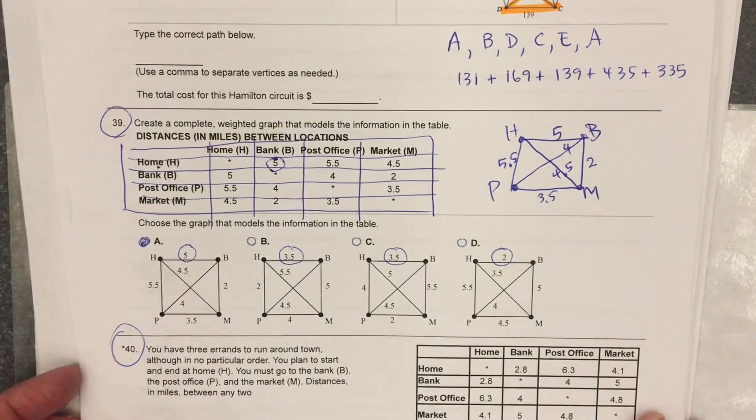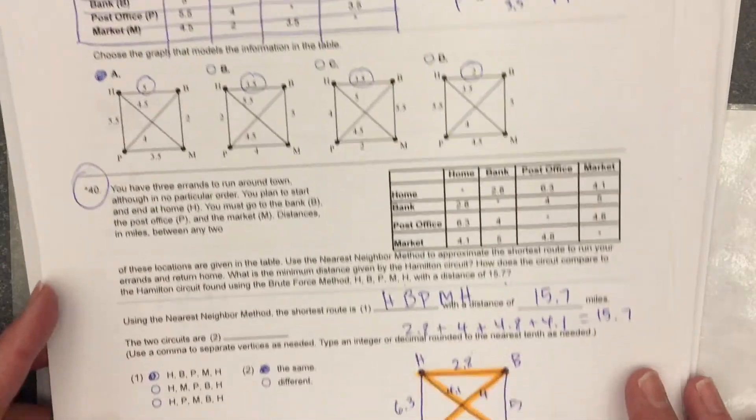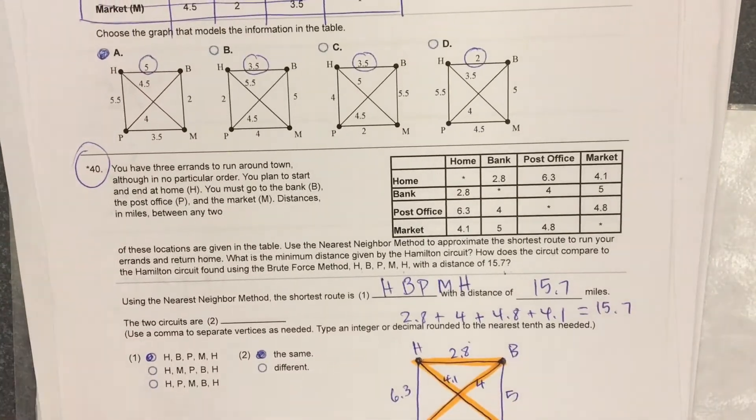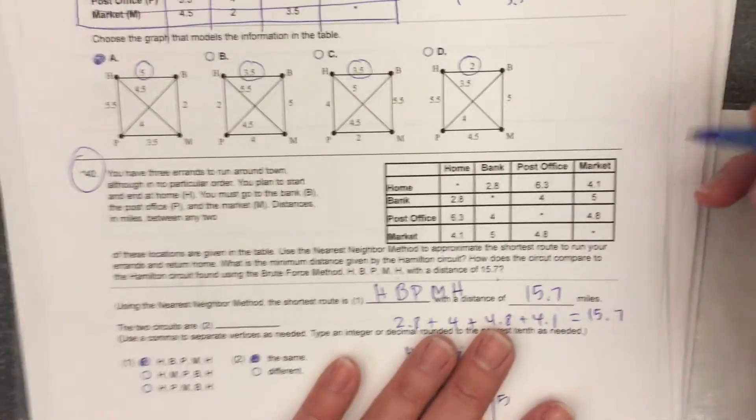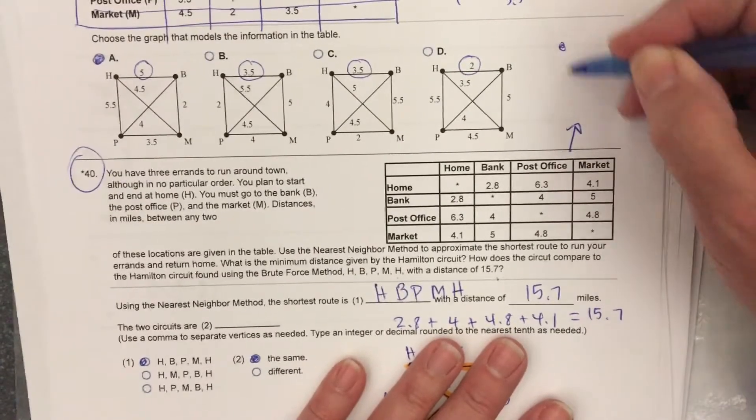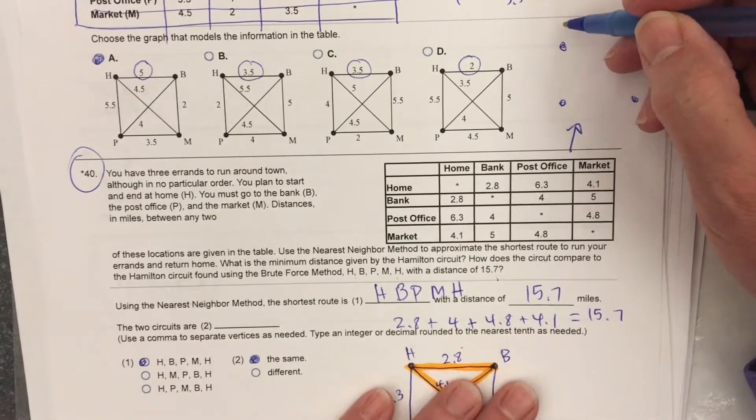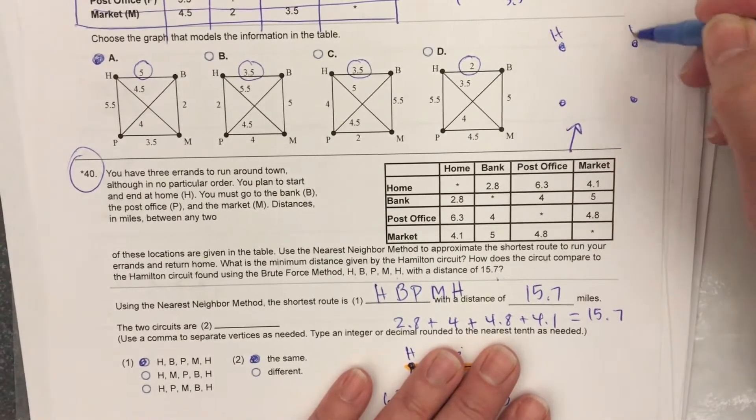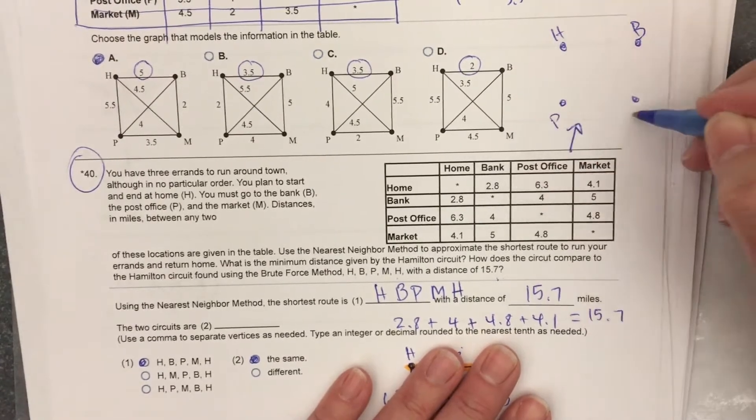Problem 40 is very similar, except they're asking a few more questions and they're not giving you the graph on 40. So what you would do on 40 is look at the chart. I'm going to put the work right up here for 40. Home to the bank is 6.3.